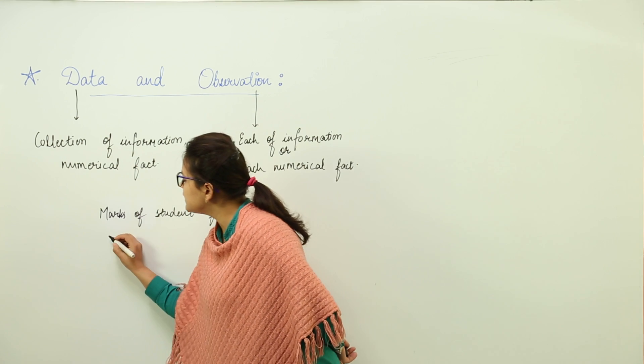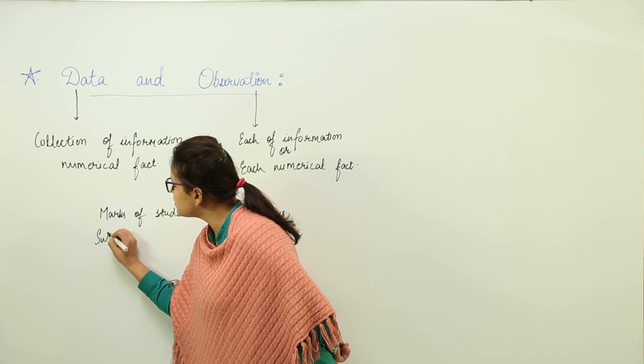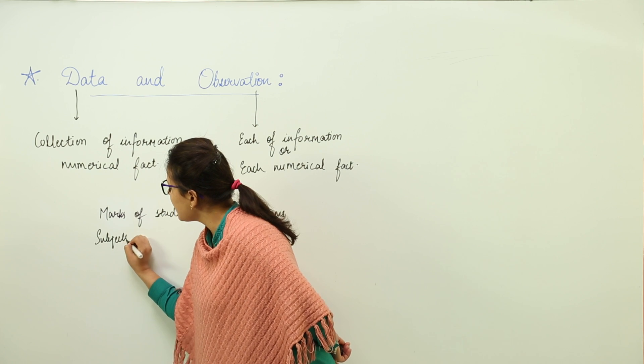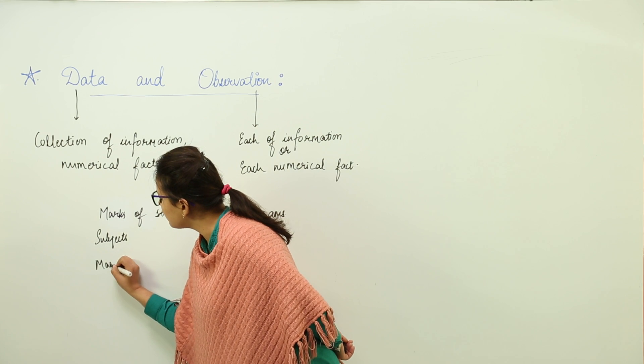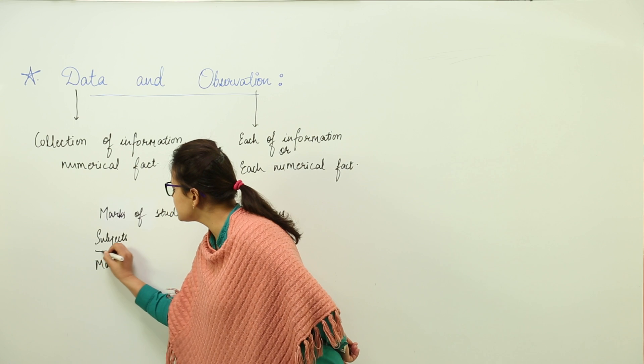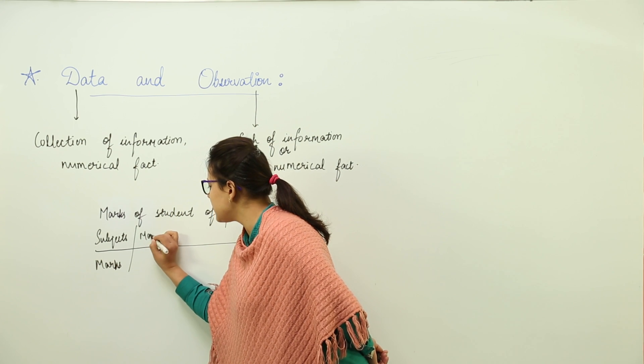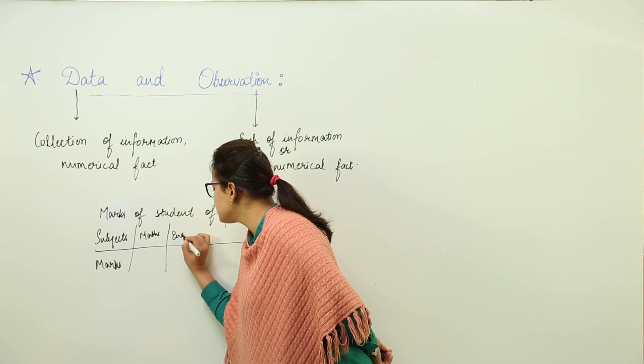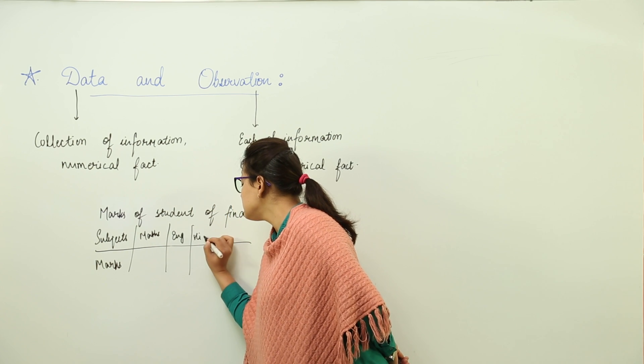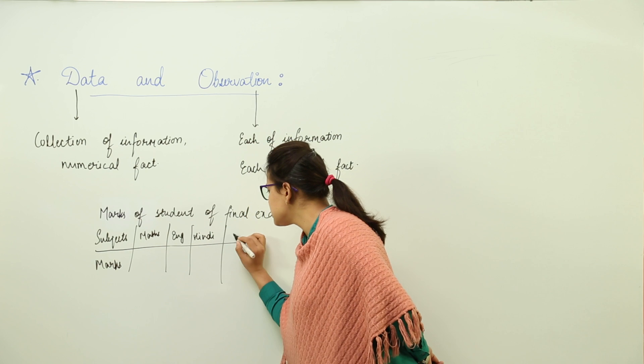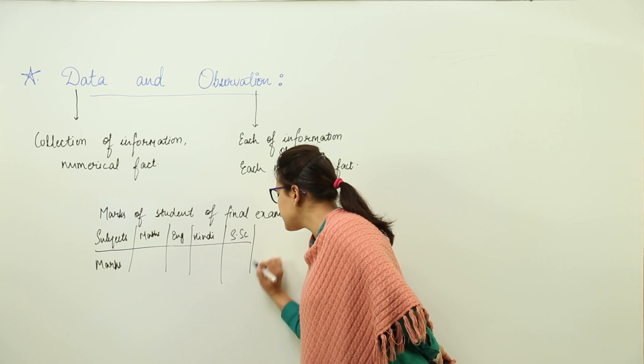So I am writing subjects in the first column and marks in the second one. Say that the marks are out of hundred and we have five subjects. Let's write: Maths, English, Hindi, Social Science, and Sciences.